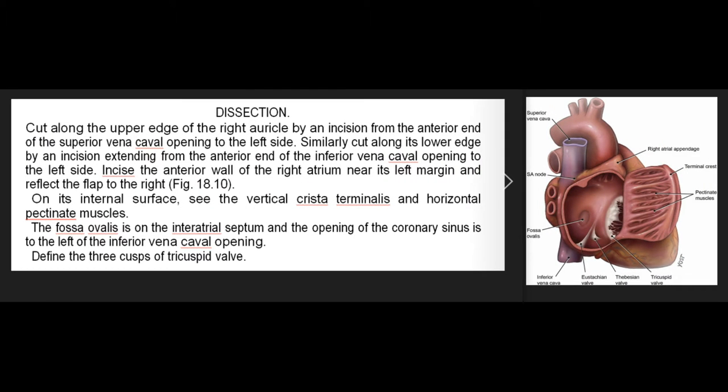Right atrium dissection: Cut along the upper edge of the right auricle by an incision from the anterior end of the superior vena cava opening to the left side. Similarly cut along its lower edge extending from the anterior end of the inferior vena cava opening to the left side. Incise the anterior wall of the right atrium near its left margin and reflect the flap to the right. On its internal surface, see the vertical crista terminalis and horizontal pectinate muscles. The fossa ovalis is on the interatrial septum, and the opening of the coronary sinus is to the left of the inferior vena cava opening. Define the three cusps of the tricuspid valve.